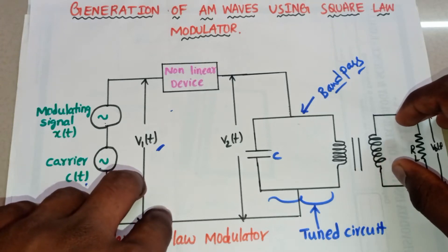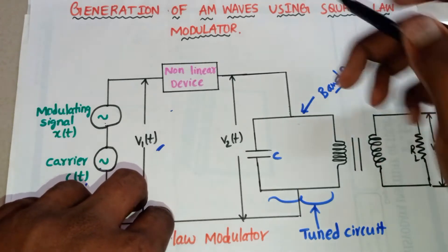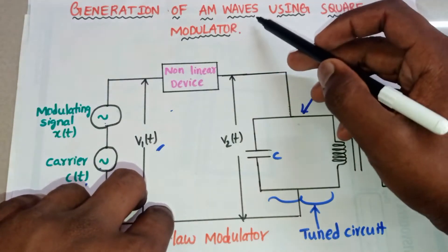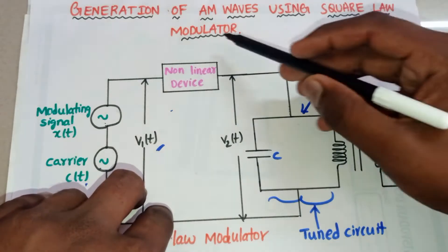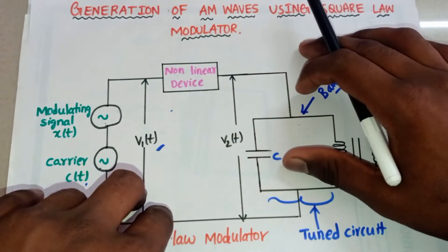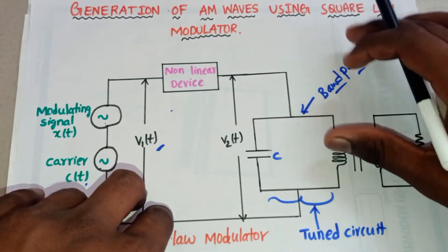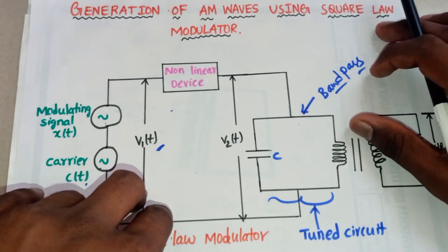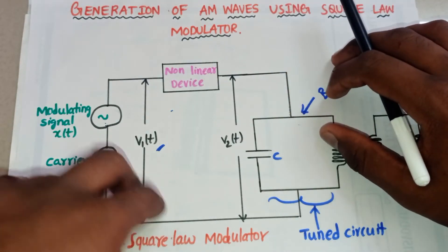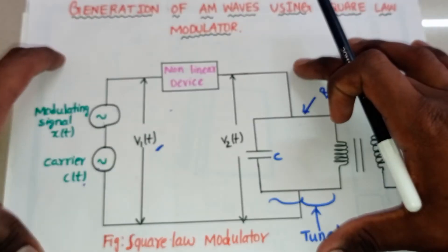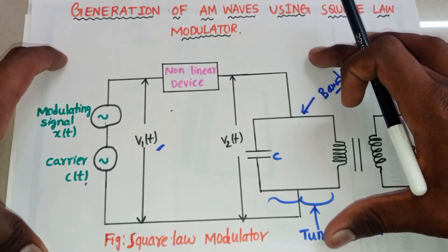Hello friends, in this video we will discuss the generation of AM waves using a square law modulator. It is nothing but generation of an amplitude modulated wave using the square law modulator. Here, this is the block diagram of the square law modulator.